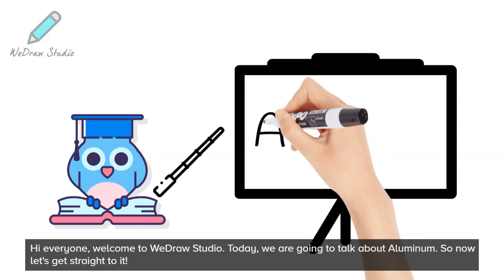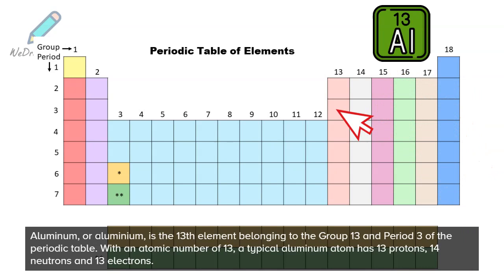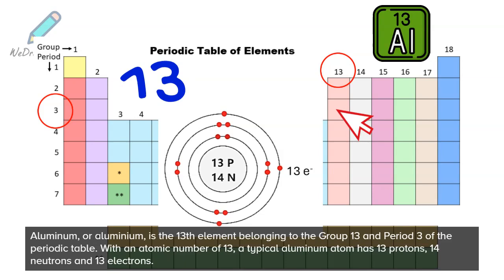Aluminum, or Aluminium, is the 13th element belonging to group 13 in period 3 of the periodic table. With an atomic number of 13, a typical Aluminum atom has 13 protons, 14 neutrons, and 13 electrons. The name Aluminum is derived from the Latin word Alumin, which means bitter salt or alum.